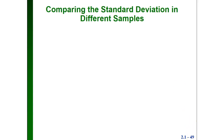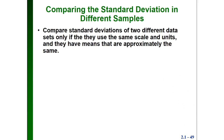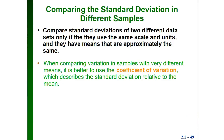Another thing we're going to look at is comparing the standard deviation in different samples. We can really only compare standard deviations for two different data sets if they use the same scale and the same units, and if they have means that are approximately the same, because the standard deviation depends so much on what the mean of the data is. If two samples don't fit that criteria, it's better to use the coefficient of variation.